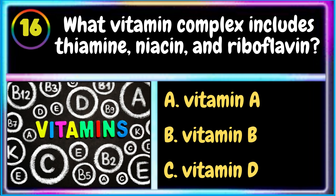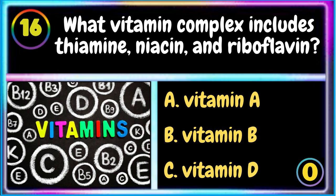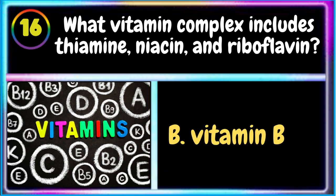16. What vitamin complex includes thiamine, niacin, and riboflavin? A. Vitamin A B. Vitamin B C. Vitamin D. The correct answer is B. Vitamin B.